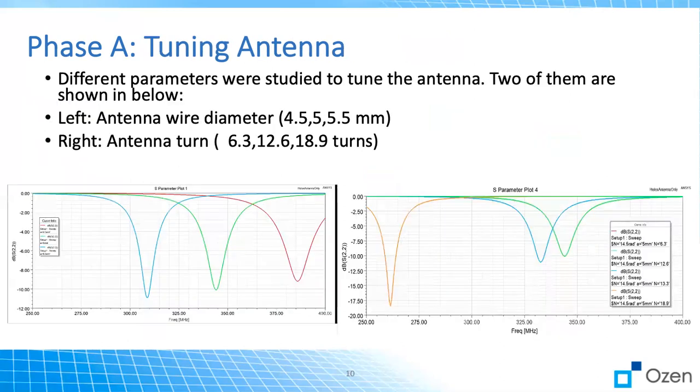Once we run it, we tried many different parameters. It will be too much to show, so we just show two of them here. But if presenters, if people are interested, we can show more details. The wire diameter are studied here 4.5, 5 and 5.5 millimeter. And as you can see the dip frequency is shifting to the right.